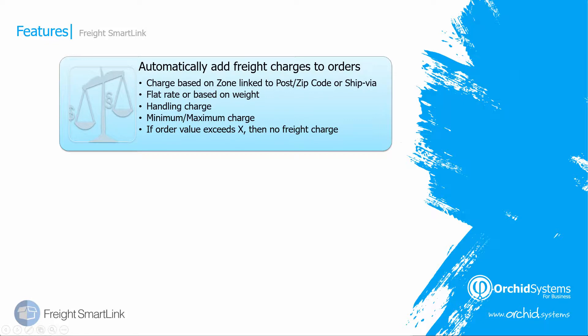Zones can be configured to have a flat rate or be based on a charge per kilo. You can also have a default handling charge and a minimum and maximum charge for your weight-based freight charges. You can also have a maximum order value — if the order exceeds that value, then no freight will be charged.